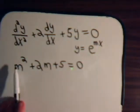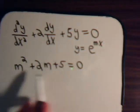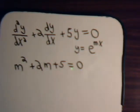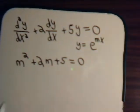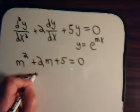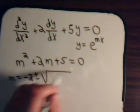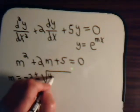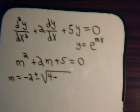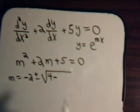And m is obtained by solving this, what we call the auxiliary equation. And here we see that we solve it using the quadratic formula, m equals minus 2, plus or minus the square root of b squared, that's 4, minus 4ac, 4 times 5, that's 20.